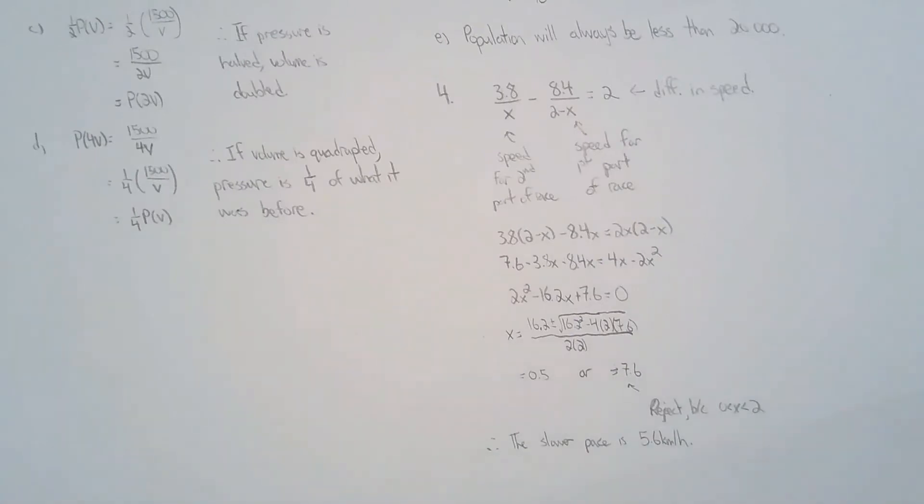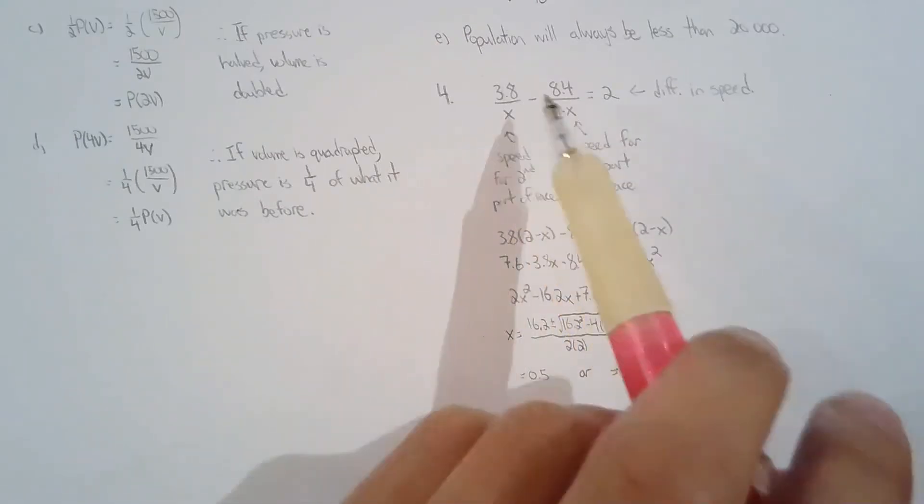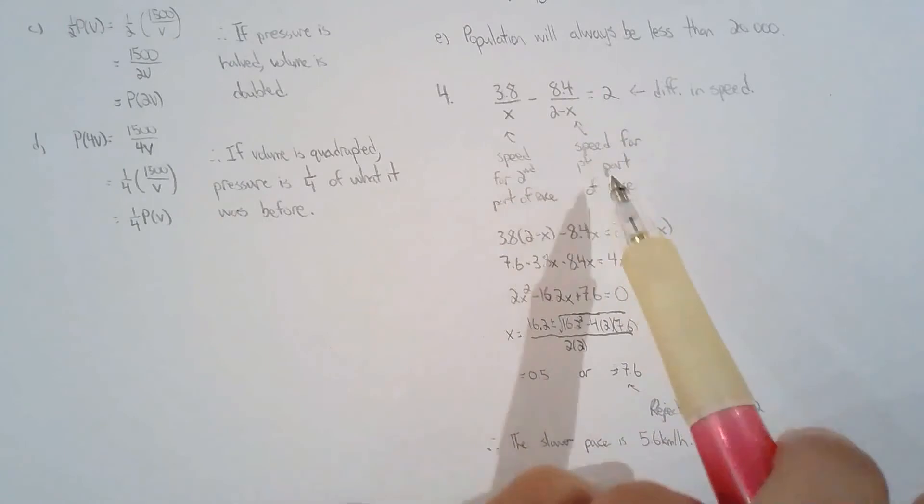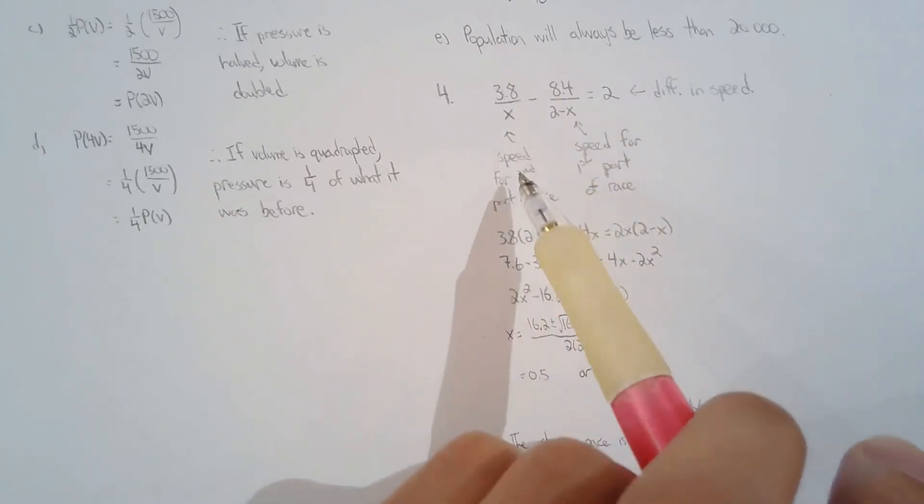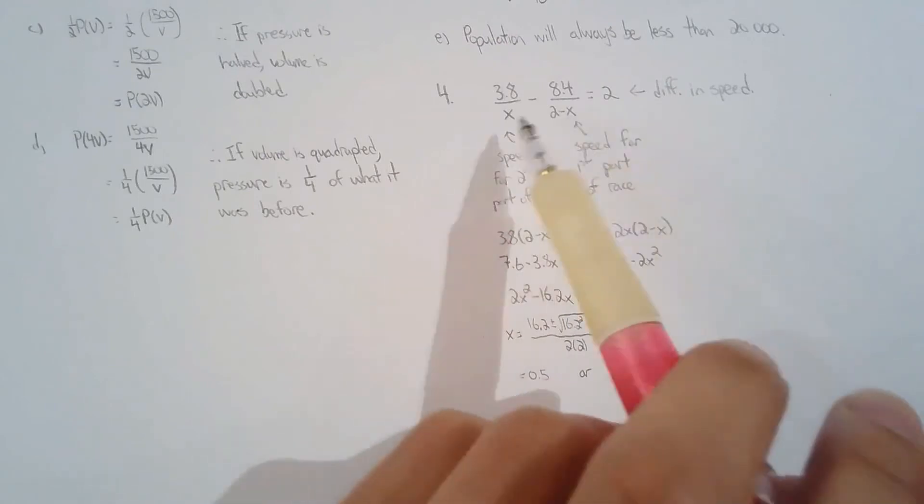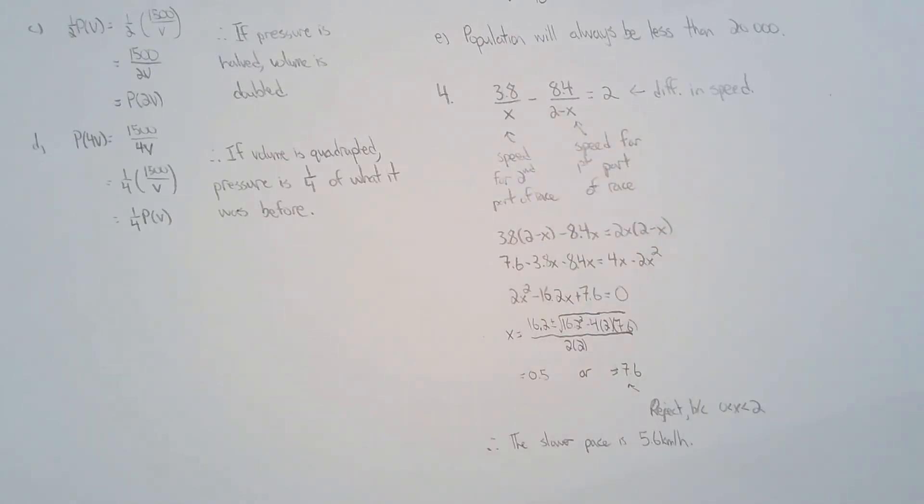For question four, a lot of students struggle with this question. Question four, you basically have two parts to the race. This is speed for the second part and speed for the first part. In the second part you're faster by two kilometers per hour. That's how I built the equation that models the situation.